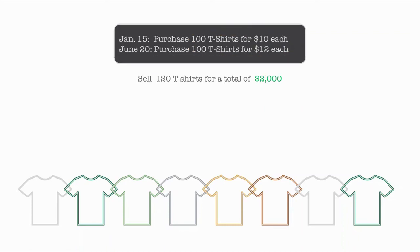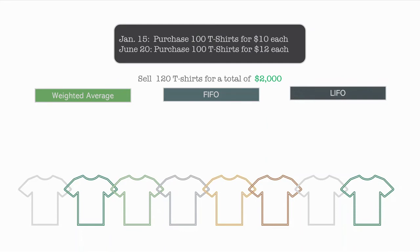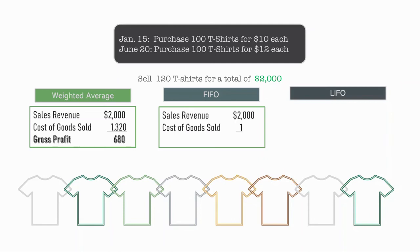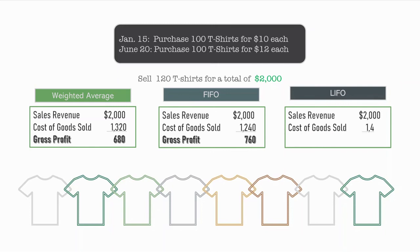Let's now look at how all three examples compare and how they impact gross profit. In all three instances, the sales revenue is the same — 120 t-shirts for $2,000 — but the cost of goods sold varies. Under weighted average, cost of goods sold is $1,320 and gross profit is $680. Under FIFO, cost of goods sold is $1,240 and gross profit is $760. Under LIFO, cost of goods sold is $1,400 and gross profit is $600.